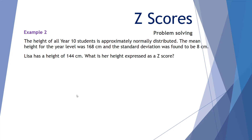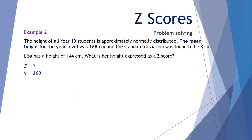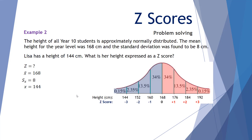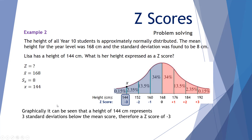Example number 2. The height of all Year 10 students is approximately normally distributed. The mean height was 168 centimetres and the standard deviation was 8 centimetres. Lisa has a height of 144 centimetres — what is her height expressed as a z-score? I've placed the mean height of 168 on the curve and added increments of 8: one standard deviation is 176, two is 184, three is 192. Going down: one standard deviation is 160, two is 152, three is 144. Graphically, Lisa's height of 144 represents exactly three standard deviations below the mean, giving a z-score of minus 3.